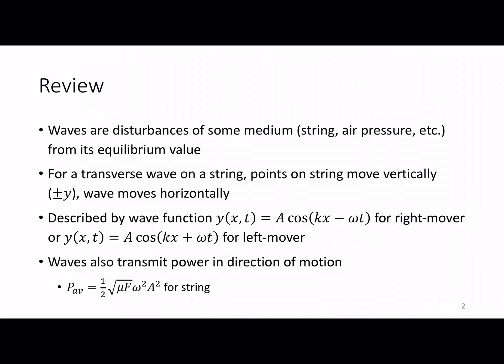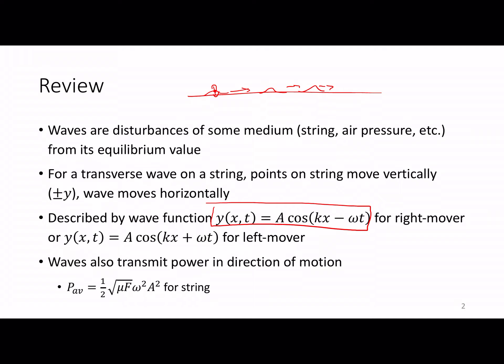What we talked about last time was the basic idea of waves. Waves are not the movement of objects, but disturbances on a medium. A transverse wave, like a wave on a string, has points moving up and down vertically while the wave moves horizontally — perpendicular to one another. We describe that by a wave function: y = A cos(kx − ωt) is a right mover, y = A cos(kx + ωt) is a left mover. Waves transmit power in the direction of motion, and we learned the formula for average power.